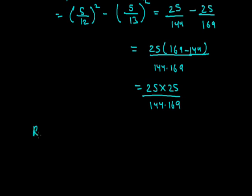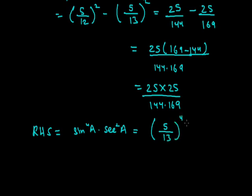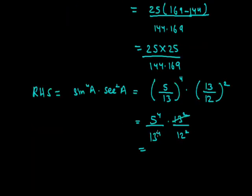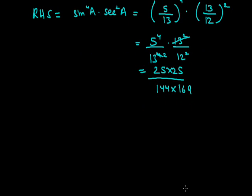We will see whether we get the same thing in the RHS. RHS = sin⁴A · sec²A. Sin A = 5/13, so sin⁴A = 5⁴/13⁴. Sec A = hypotenuse/base = 13/12, so sec²A = 13²/12². Therefore RHS = (5⁴/13⁴) × (13²/12²) = 5⁴/(13² × 12²) = 625/(169 × 144) = 25 × 25/(144 × 169). This is the same as LHS, so LHS = RHS. Hence proved.